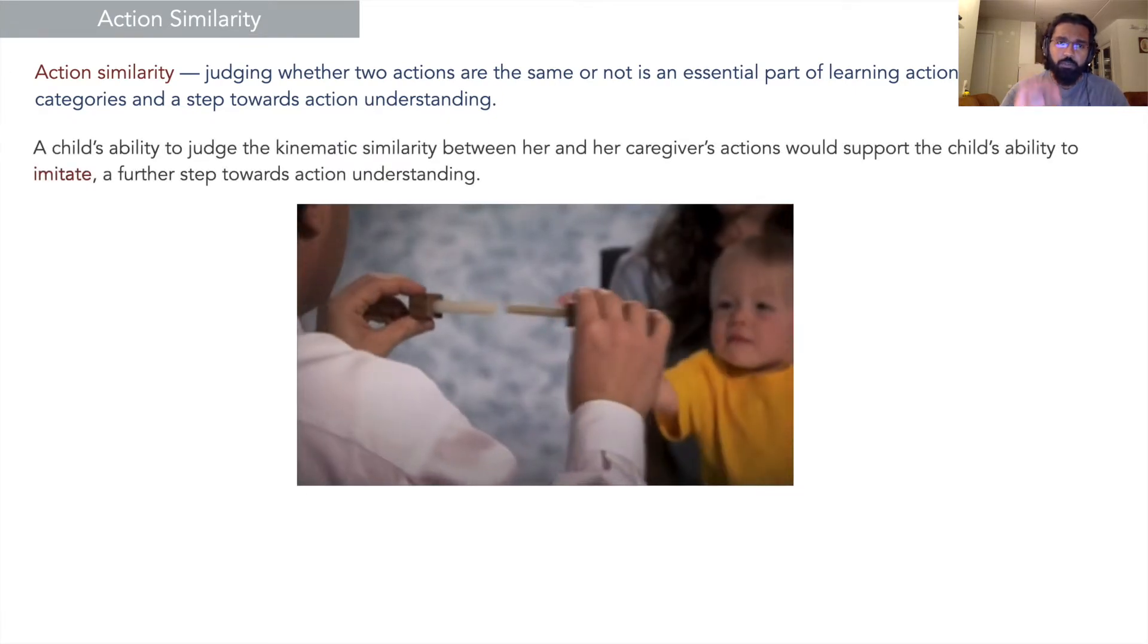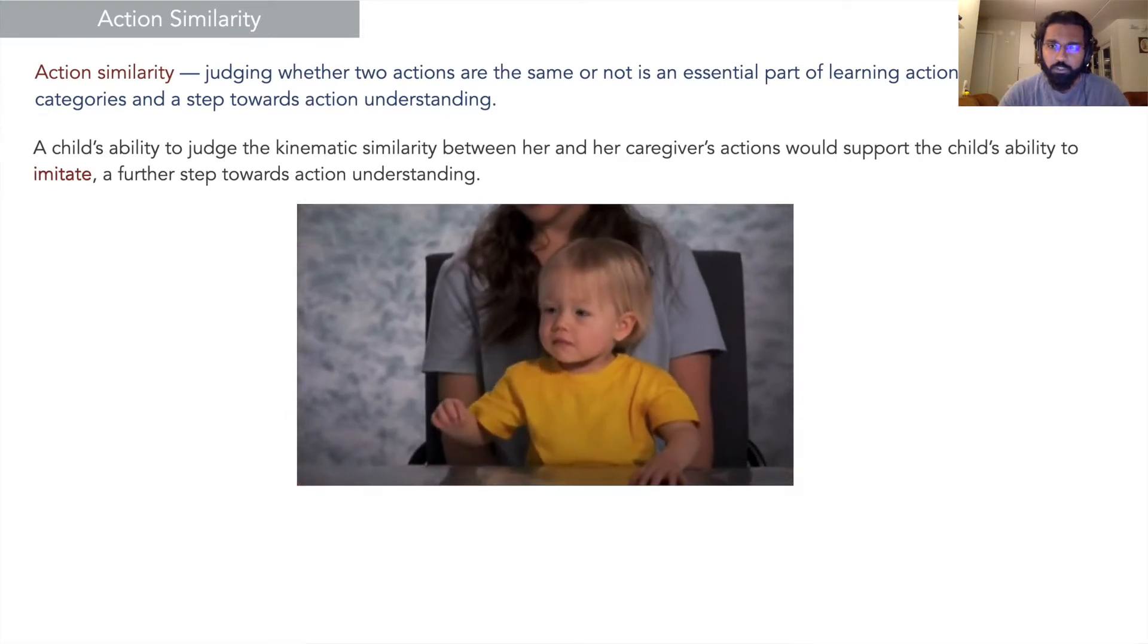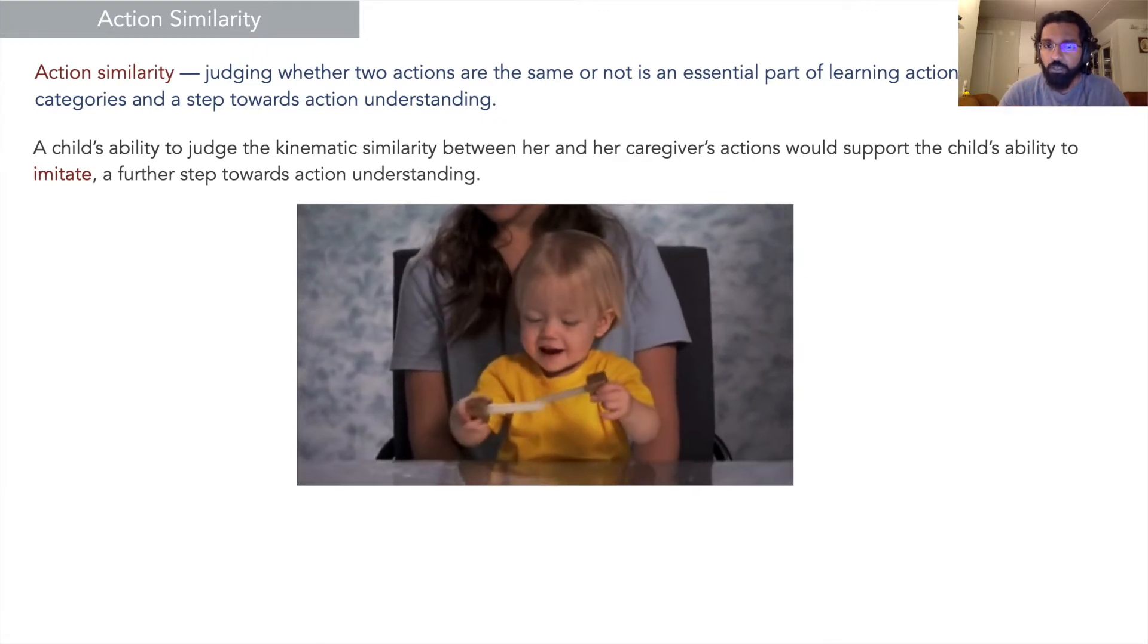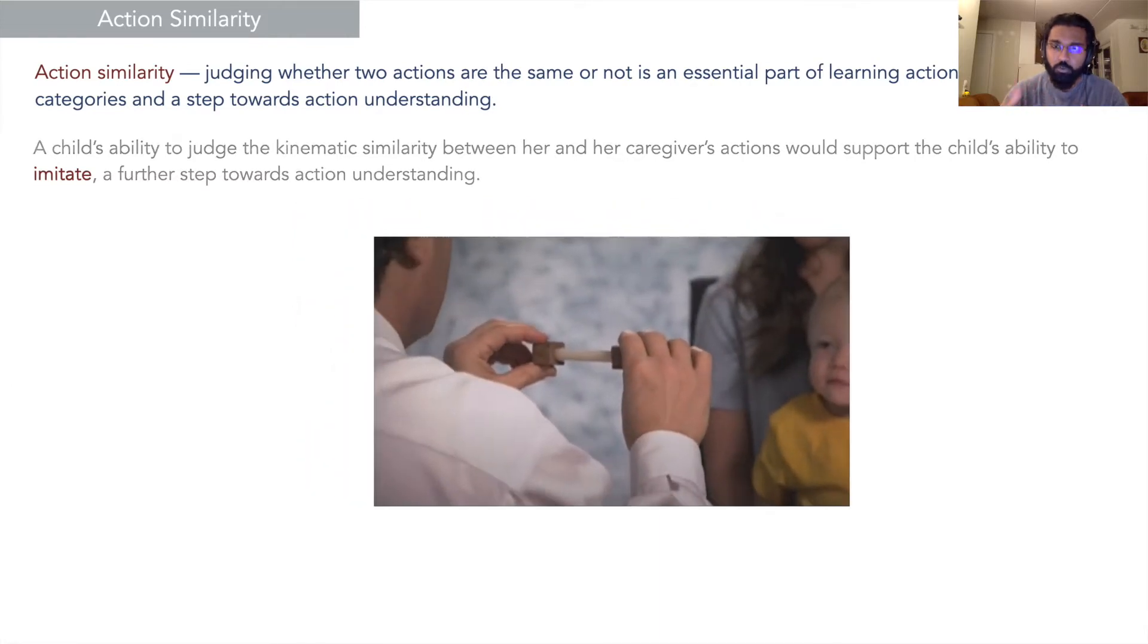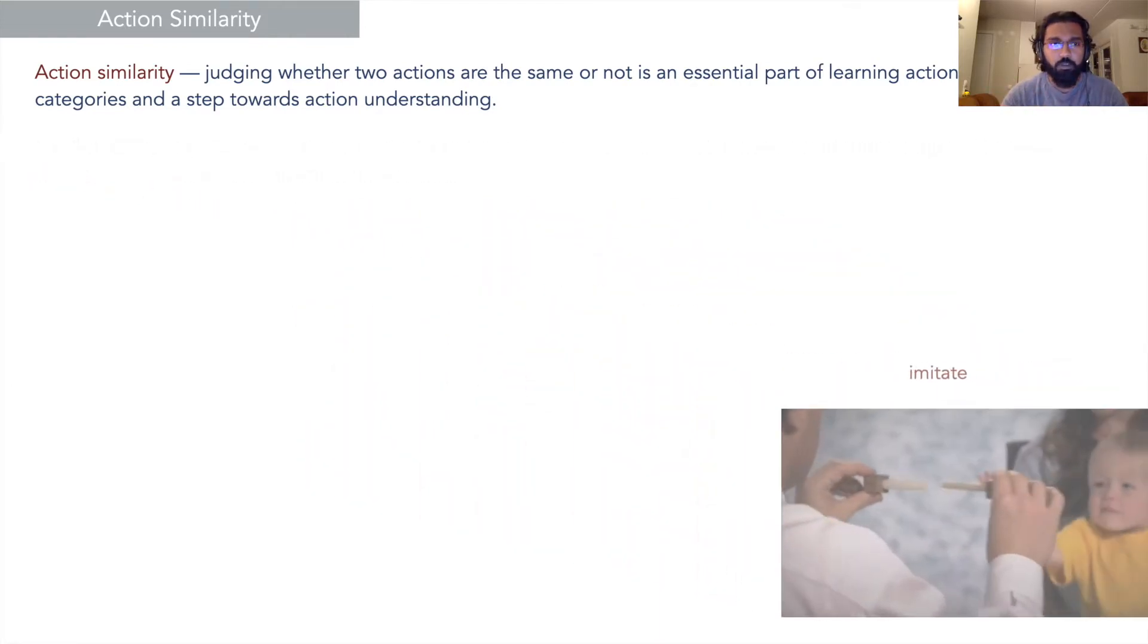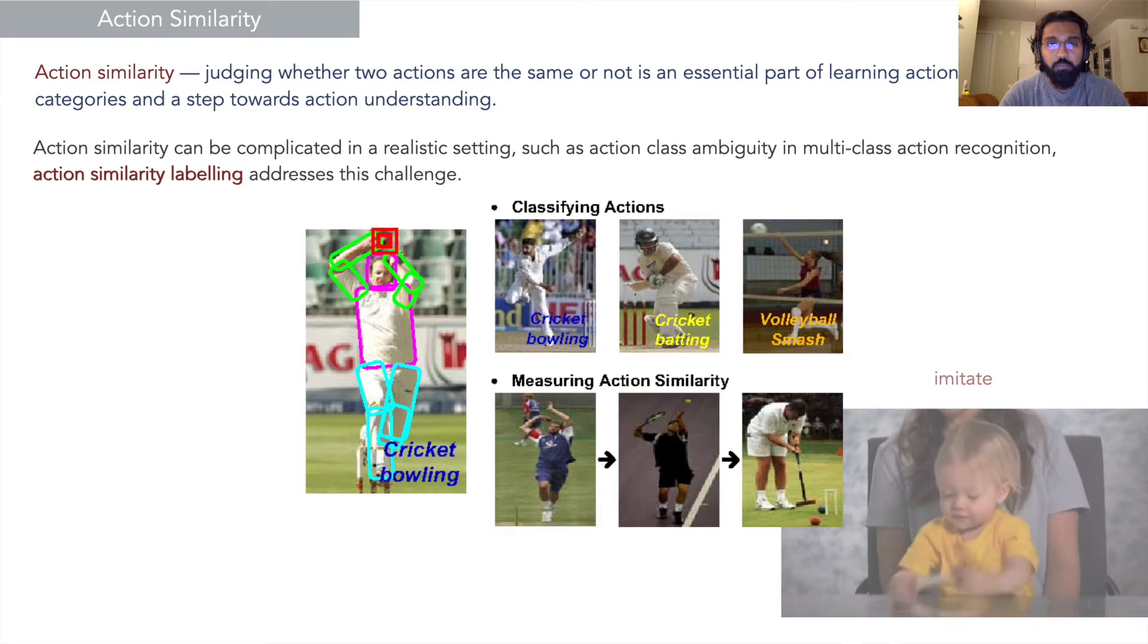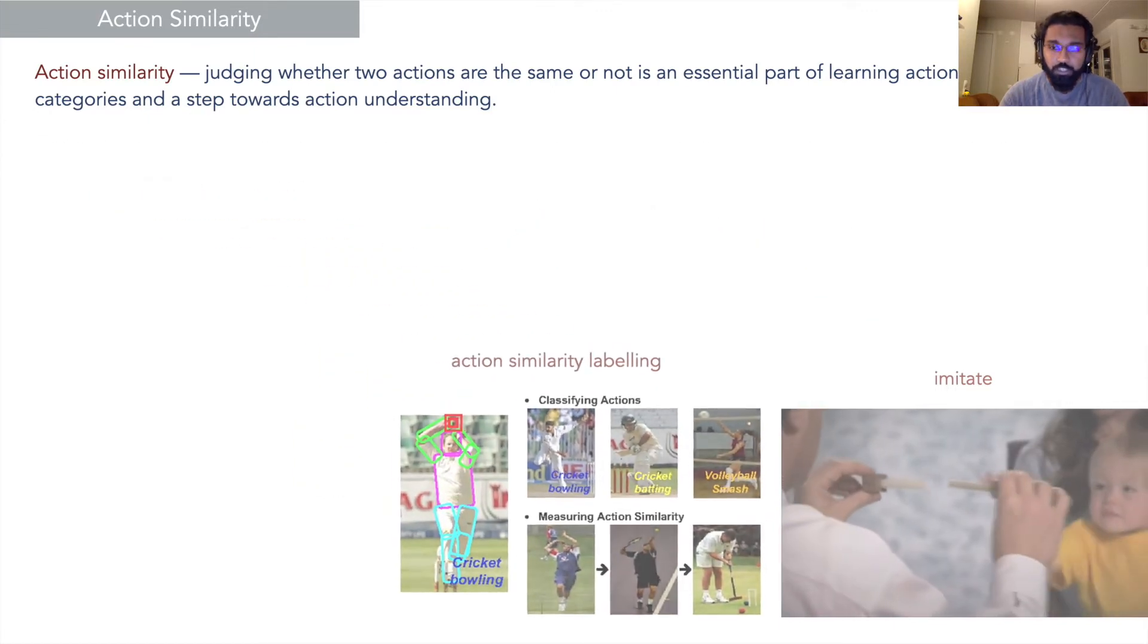From a developmental perspective, the more similar actions are to each other, the easier it is to predict the action. This becomes crucial for a child's imitation abilities. From a computational aspect, action similarity has been studied for some time, but tends to be quite complicated in realistic settings. Therefore, we have the action similarity labeling challenge to address it.